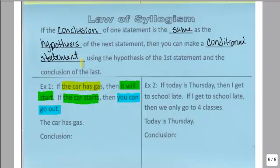So it says the car has gas. We do not need to mention the green. We can skip over that straight to the blue. So the conclusion will always be in blue. So if the car has gas, you can go out.